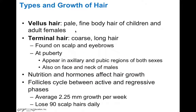There are different types of hair. Vellus hair is pale, fine body hair found in children and adult females — think of this as like peach fuzz. Terminal hair is the coarse, long hair found on the scalp and eyebrows, and it grows at puberty. You find terminal hair in the axillary and pubic regions in both sexes, and also on the face and neck of males.